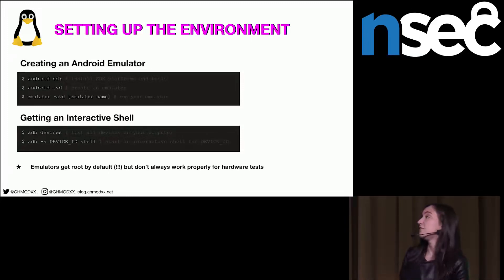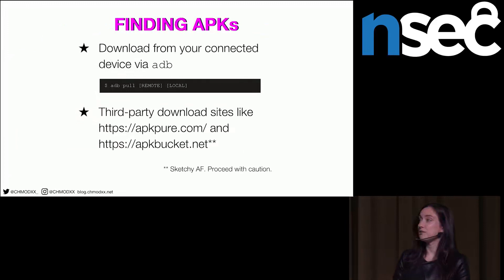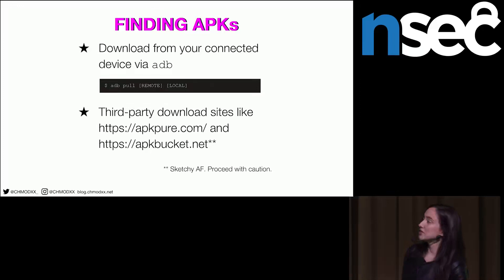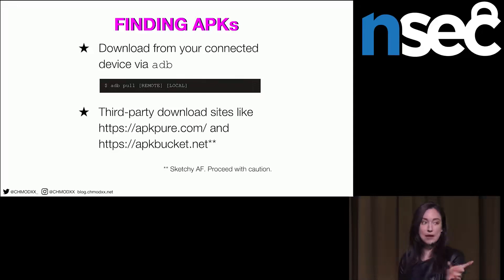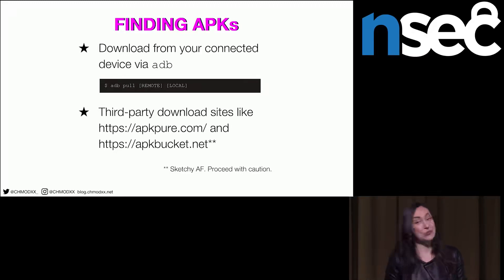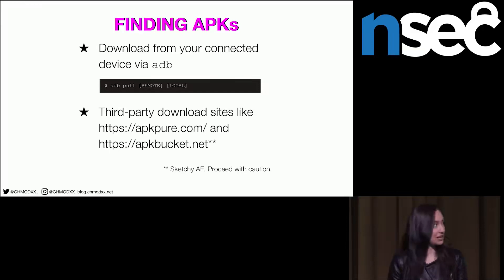Where do you find APKs? If you're a security engineer and your developer team says go get it off the Play Store, you can actually download any APKs on your device using ADB pull with the remote path and local path — an easy way to grab them off a rooted phone. You can also go to third-party download sites like APKPure and APKPocket.net. They're really sketchy, but they do work.